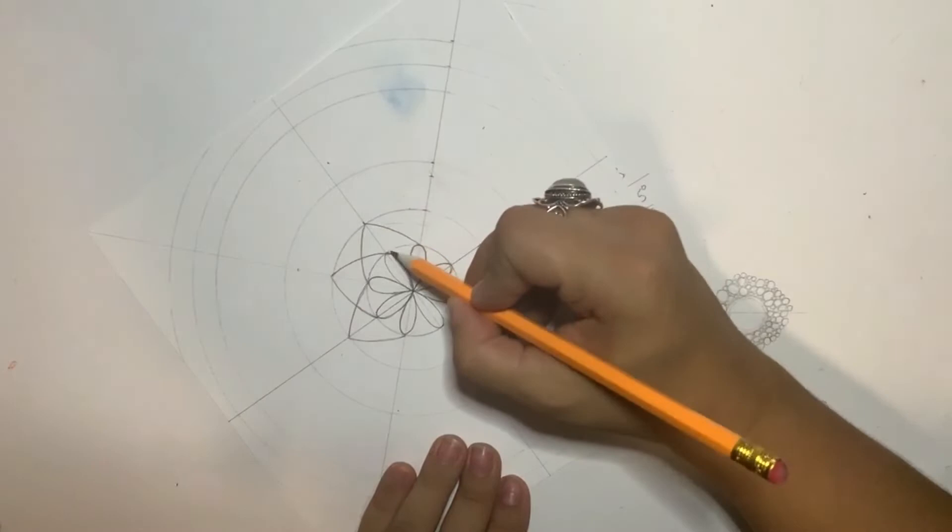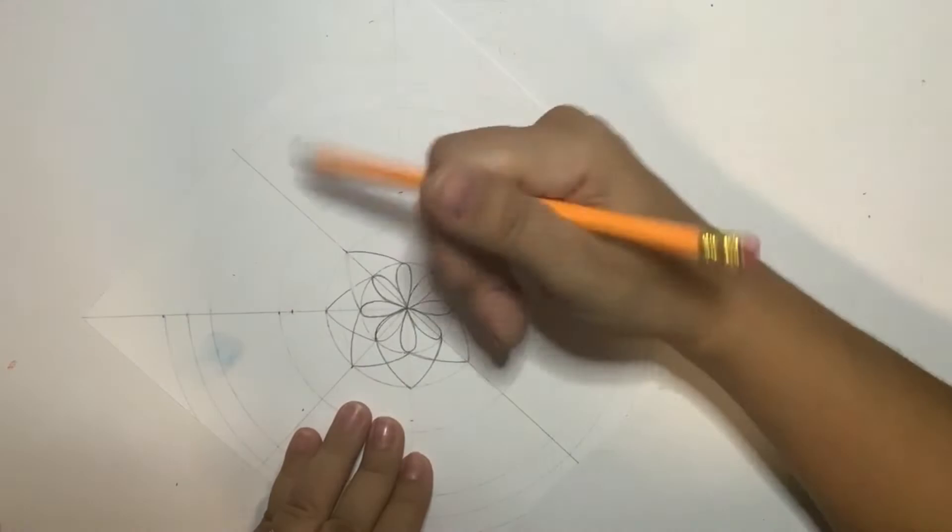And I'm gonna do this around this circle and I keep connecting petals like this. And the funny part is that I've made a little triangle here.